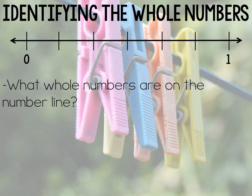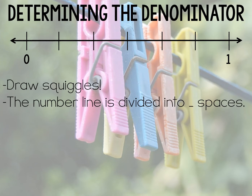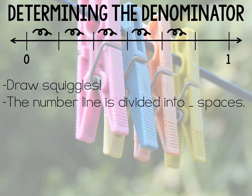When I teach my students the process of understanding fractions on a number line, identifying the whole number is the first step. Students must identify what whole numbers are on the number line — in the example shown, we see zero and one. This is important especially when you get to number lines with more than two whole numbers. The next step is to determine the denominator by drawing squiggles — a way to count the spaces rather than the lines. In this example, students would count one, two, three, four, five, six, and say the number line is divided into six spaces.